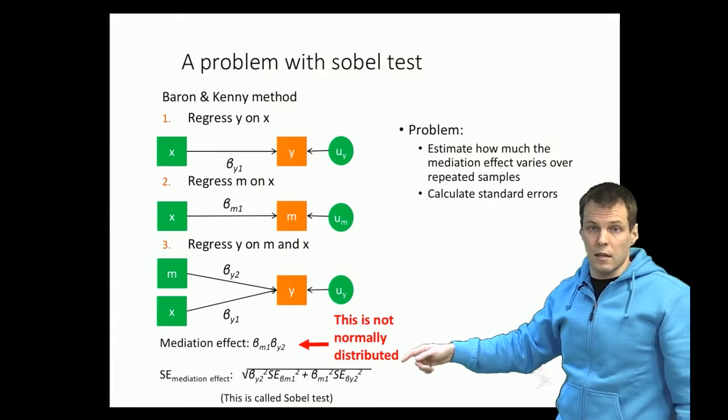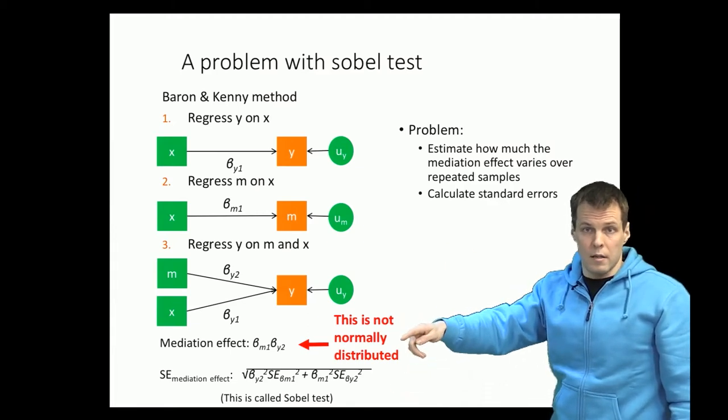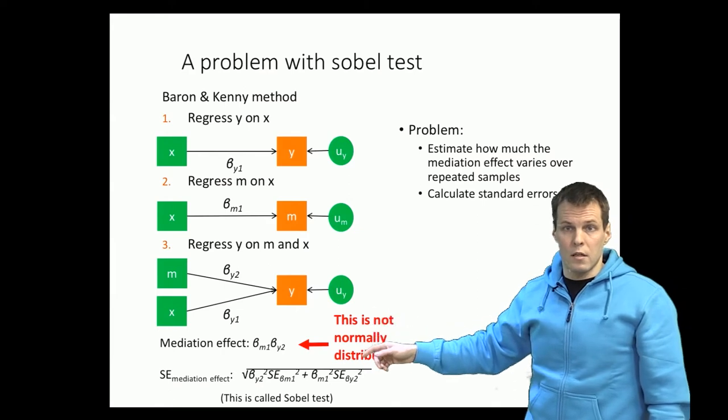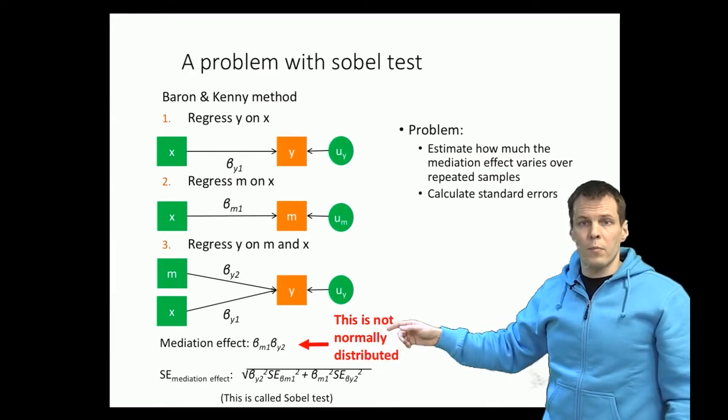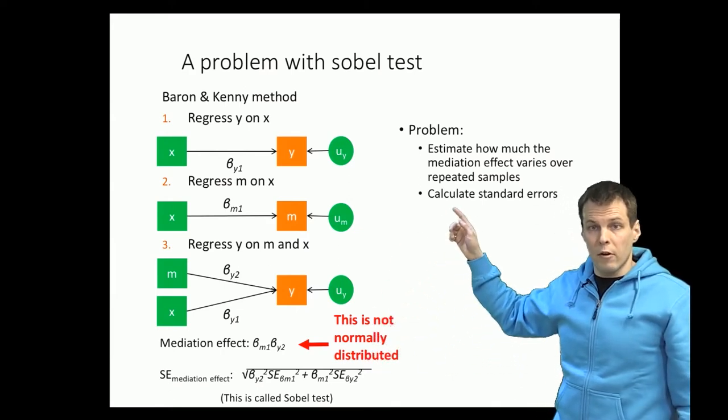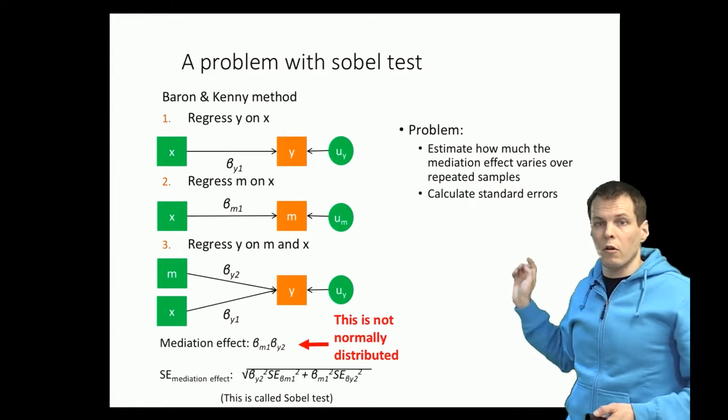The t statistic calculated using this math here doesn't follow the t distribution. So some people propose that we calculate the standard error empirically using something called bootstrapping.